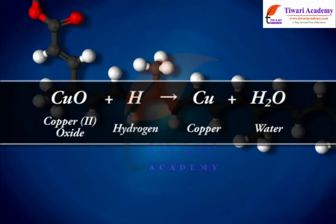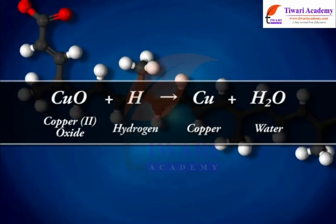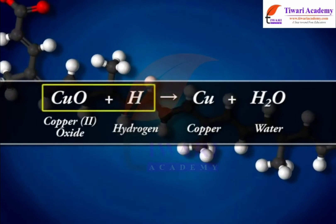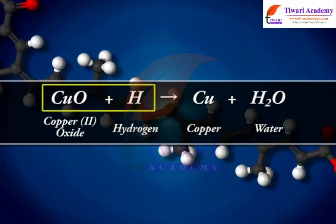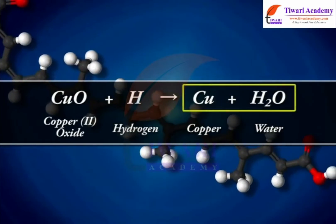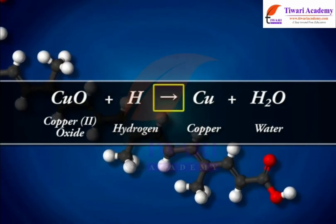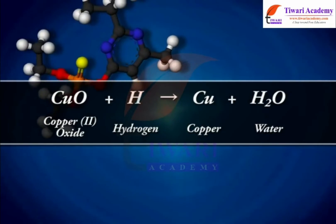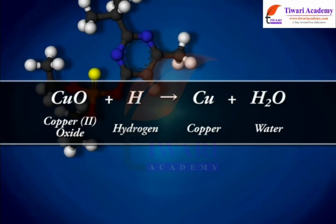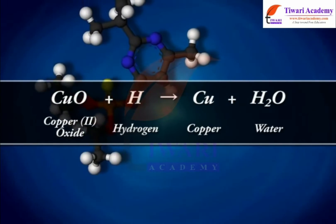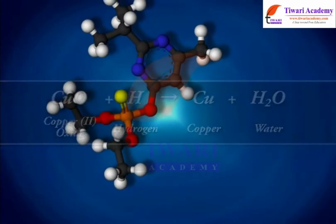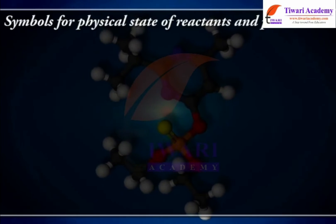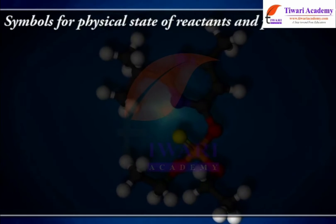A chemical equation contains reactants, products, and an arrow that separates the reactants and products. It also includes symbols for the physical state of reactants and products.